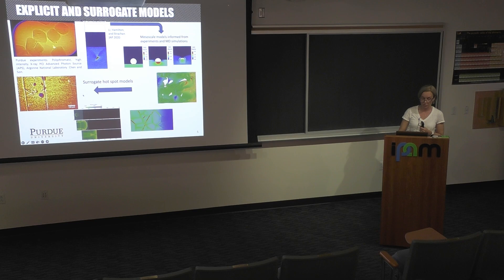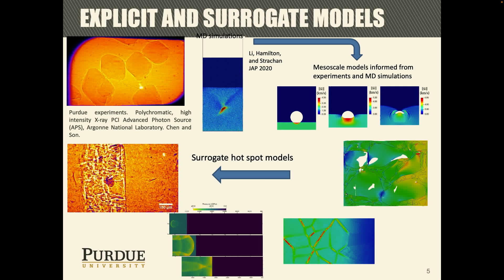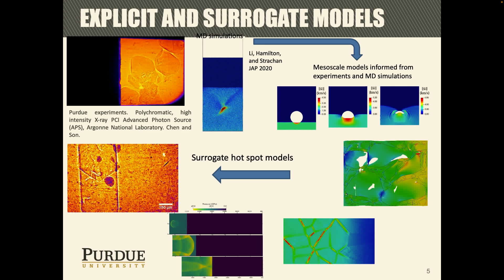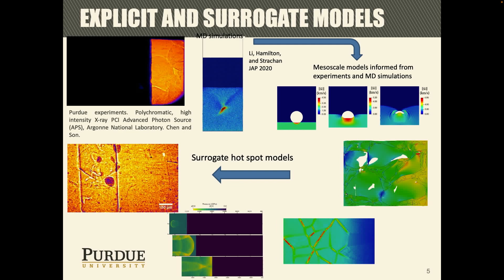I want to show you this one. This was done at 400 meters per second. You have a particle, and you see that it just crashes. You see a lot of temperature. You see the particle here — these two parallel lines are the particle and the rest is a polymer. It's very hard to tell from the experiment whether you have plasticity or fracture. For sure you have fracture.